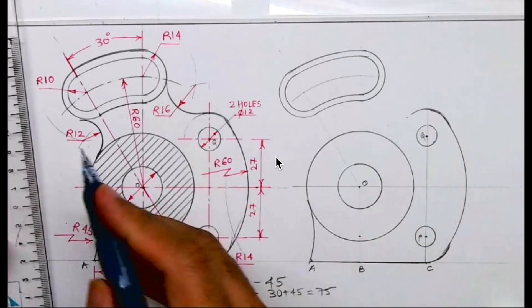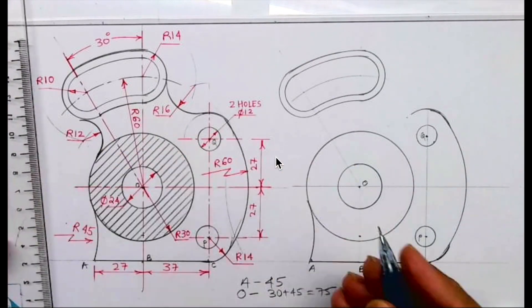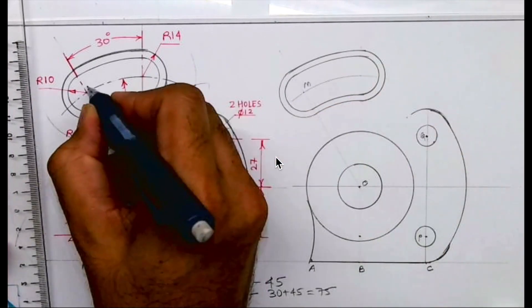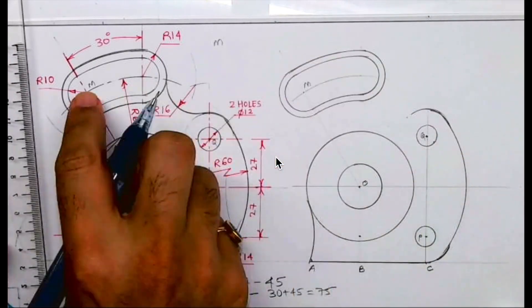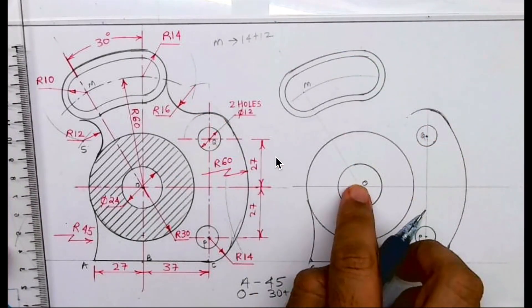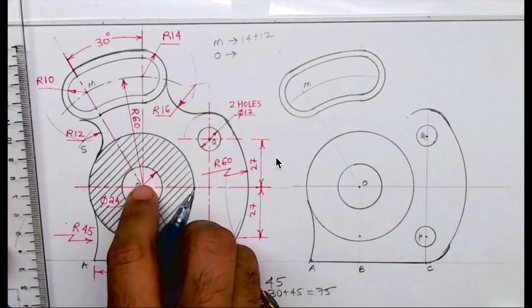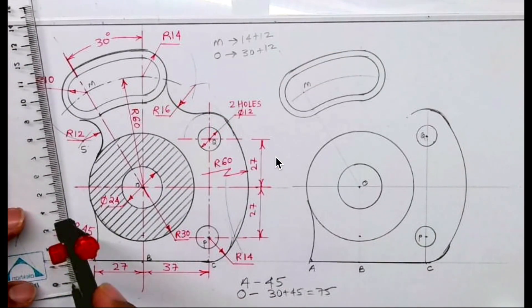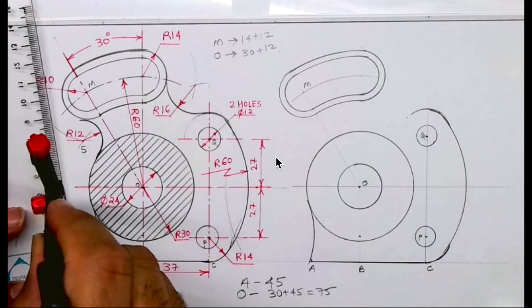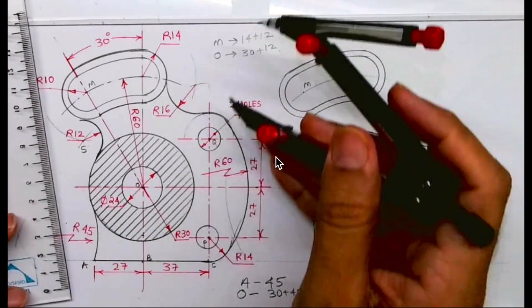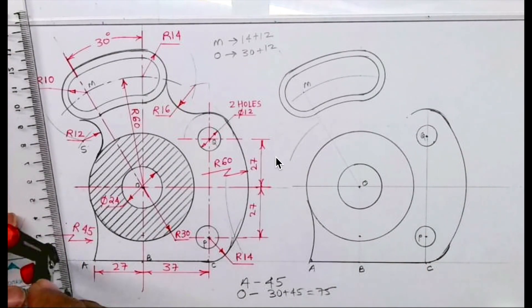After this, we have to draw radius 12. If you want to draw radius 12, this is point S and this is point M. From M you will cut 14 plus 12, and from O we will cut 30 plus 12. So it is 26 and 42. You take 42 and cut from O, and from M you cut 14 plus 12.